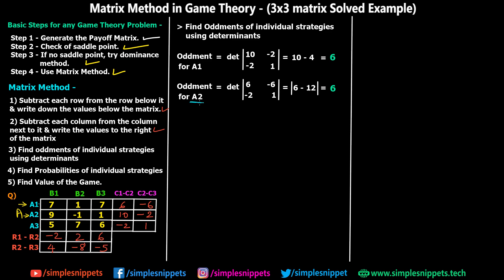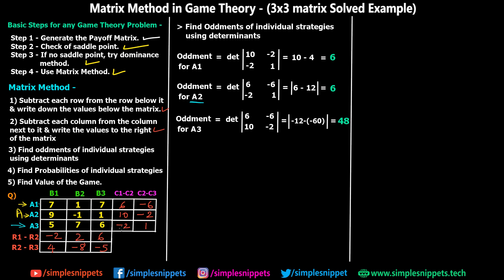For the oddment of A2, we exclude the middle row and take the values 6, −6, −2, and 1. The determinant gives 6 minus 12, ultimately giving 6. For the oddment of A3, we exclude the last row and take 6, −6, 10, and −2. Calculating the determinant gives 48. So the oddments for player A's strategies are: A1 = 6, A2 = 6, A3 = 48.